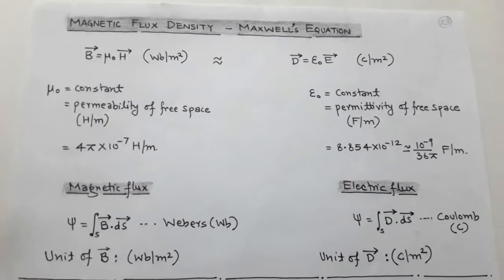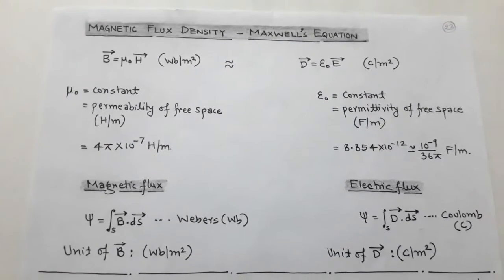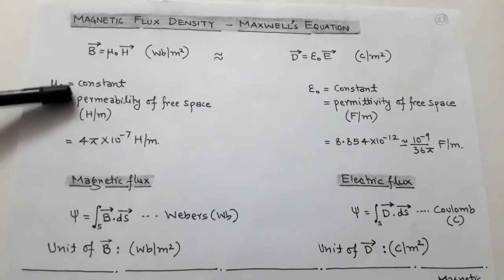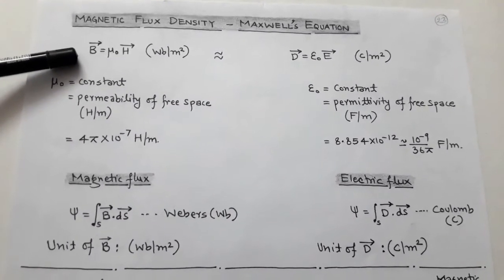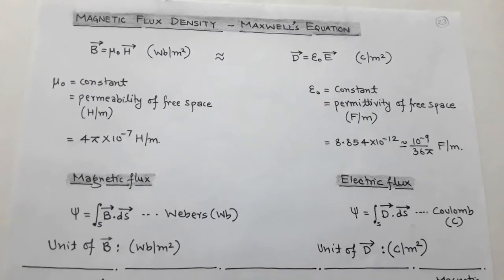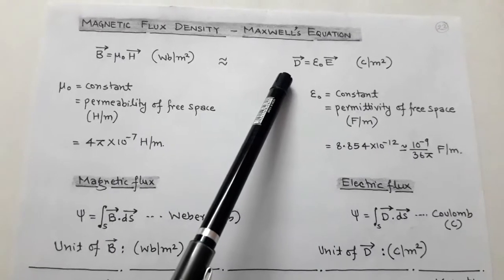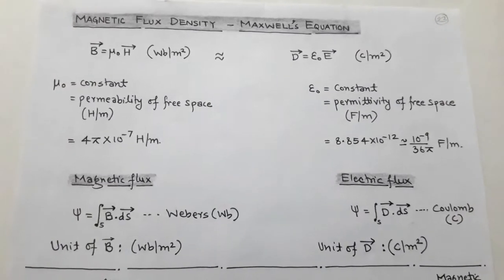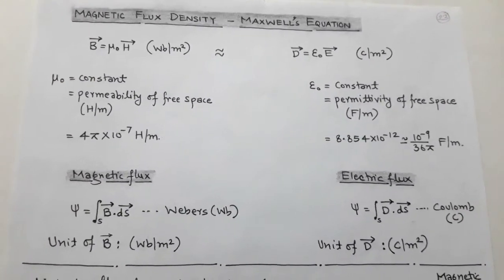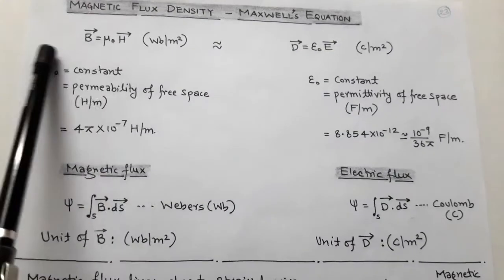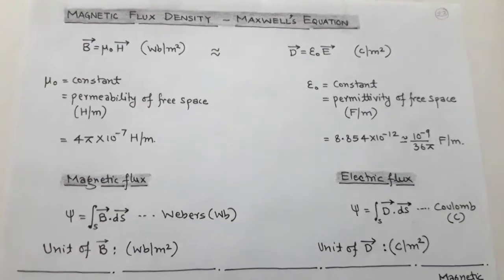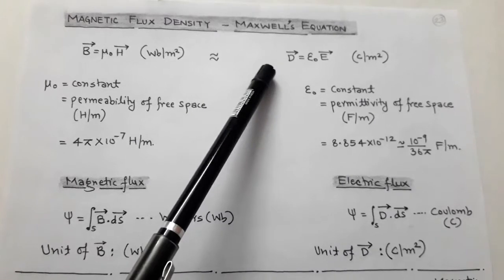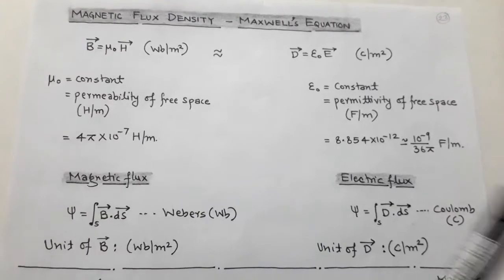The topic is Magnetic Flux Density and the Introduction of Maxwell's Equations. In magnetostatics, the magnetic flux density is denoted by B vector and equals μ₀H vector. This is similar to the electric flux density D vector which equals ε₀E vector. Here, E vector is called electric field intensity, H vector is called magnetic field intensity, D is called electric flux density, and B vector is called magnetic flux density.